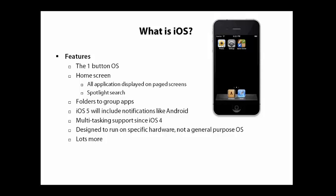You can use folders to group apps together — this was a new feature released in iOS 4. iOS 5 is going to include notifications like Android, so you'll have a dropdown that you can drag from the top of the screen to see notifications. Right now, the notification system on the iPhone is a little modal dialog that pops up. Multitasking support was added in iOS 4, which is interesting to you as a developer because there are a lot of rules around multitasking, so if you want to do a multitasking app, you'll need to understand how this works.